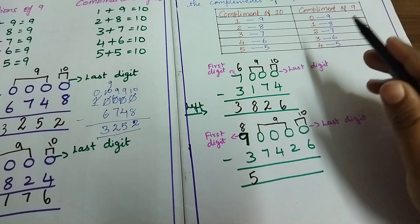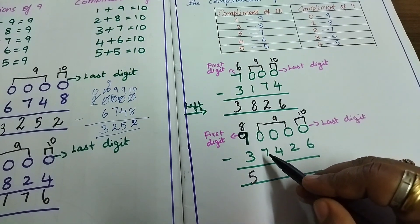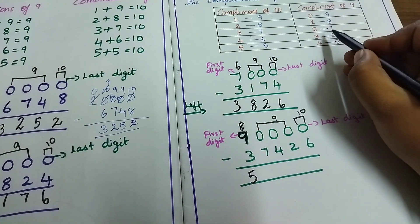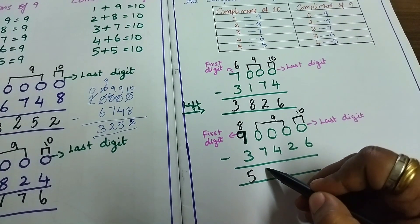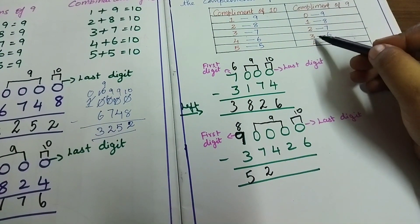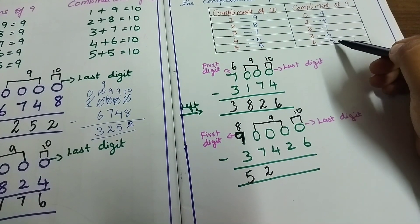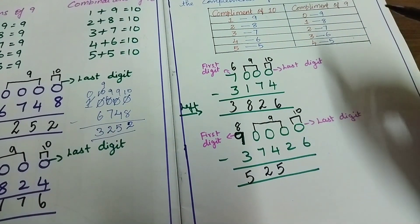So if you know the compliments, quickly you can write the answer. Check the compliment of 9. What is the compliment of 7? It is 2. What is the compliment of 4? It is 5.